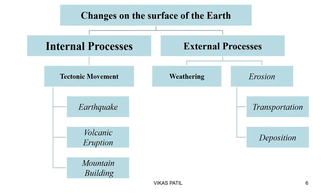We see changes on the surface of the earth — as we have learnt earlier, internal processes and external processes both are responsible for it. We have learnt about the internal processes: tectonic movements, earthquakes, volcanic eruptions and mountain building. We are about to learn about the external processes. Weathering is the part of this chapter and erosion will be taken up in the next chapter.